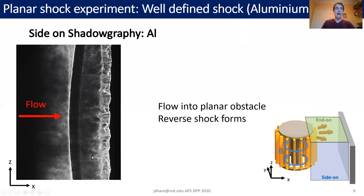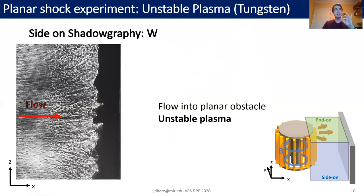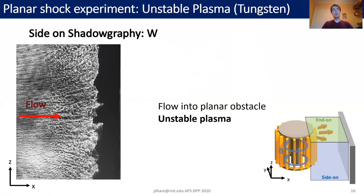However, when we swap out the aluminum wires for tungsten wires but keep everything else the same, we see something very dramatic. Instead of a nice stable well-defined shock, we see this very unstable plasma with structure on all of the resolved length scales. The question I'm posing in this talk is: why does this happen? Why does our plasma go unstable? And we're going to tackle that using a range of different diagnostics.